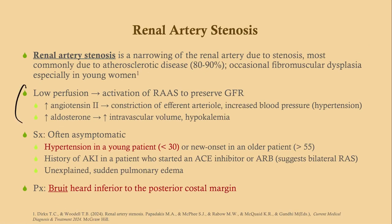The pathophysiology: increased angiotensin II causes constriction of the efferent arteriole, which increases pressure in the glomerular capillaries and increases GFR. Angiotensin II also increases blood pressure itself, and aldosterone increases resorption of fluid and sodium — but at the expense of potassium, so you can get hypokalemia. These lab findings may be present not only in renal artery stenosis but in some other causes of pre-renal failure.